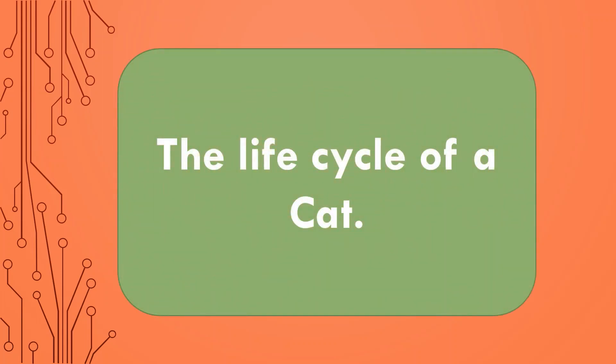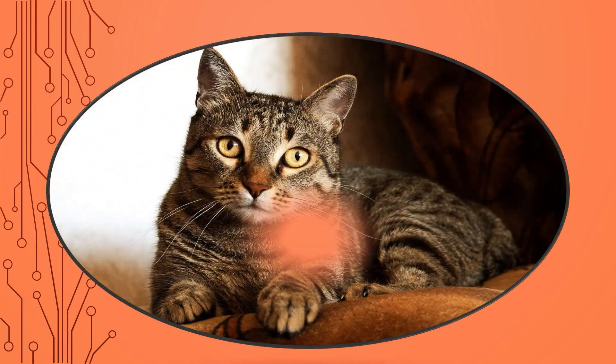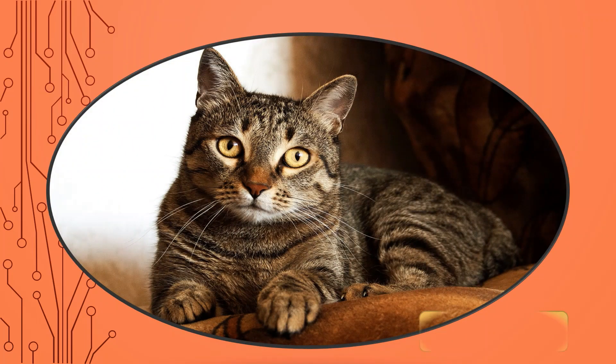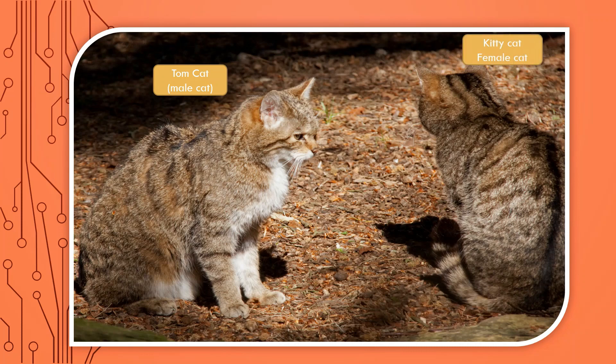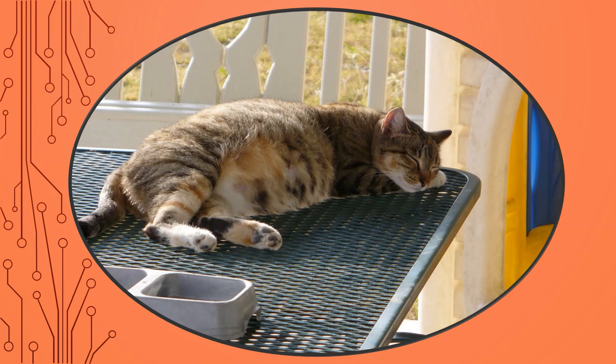Now let's go to our lesson, which is the life cycle of a cat. This is an adult cat. This is a male cat. This is a female cat. The male and the female cat will breed on breeding season, and the female cat will become pregnant.